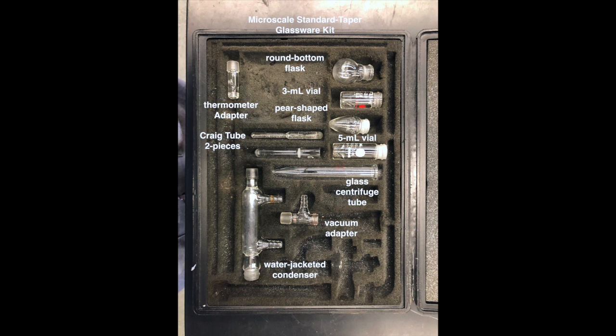For this experiment we will be using the round bottom flask for our reaction vessel. In the lower left-hand corner you'll see the water jacketed condenser which we will also use. You should familiarize yourself with all of the other pieces of equipment in this glassware kit.